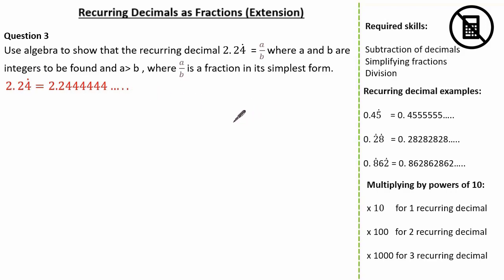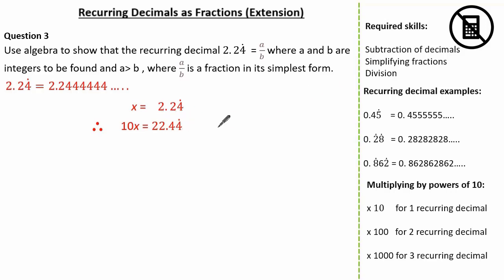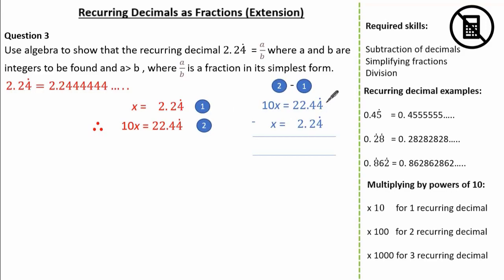Now using the same method as we have in the previous questions, let's identify x to be 2.24 recurring. Because we only have one digit that recurs, we multiply by 10, giving us 10x is equal to 22.44 recurring. Notice how we've kept to two decimal places for when we subtract later. Now let's label equation 1 and equation 2 and subtract. The 4 recurring subtract the 4 recurring is nothing. The 4 subtract the 2 is 2.